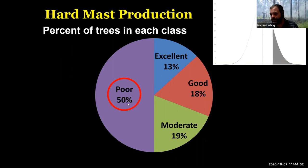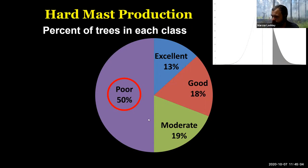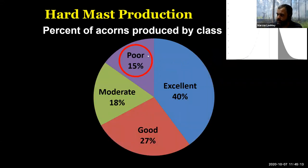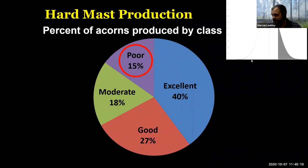What I found in that study is that 50% of the trees — notice 13% and 18% were excellent and good, that's the shaded portion of the population. The left half of the graph is poor; the shaded part is excellent and good. That 50% on the left side is only producing about 15% of the mast, while those excellent trees in the shaded portion are producing almost 70% of the mast.